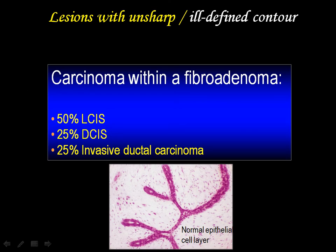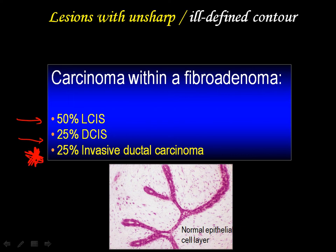Could carcinoma occur within a fibroadenoma, because of the entrapped acinoid which certainly have normal epithelial cell layers? The answer is yes. Does it happen often? No. It happens actually much less frequently than in radial scar, or in connection with sclerosing adenosis, or in connection with fibrocystic change. And when it does happen, in 50% of the cases we are talking about lobular carcinoma in situ, which radiologists cannot see. It may happen that it is in situ carcinoma — most of the times low-grade in situ carcinoma — or we may see a stellate lesion associated with growth out of a fibroadenoma.